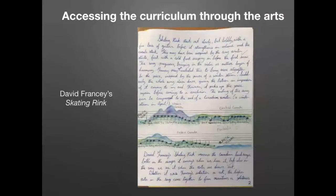Here's an interesting example of student work. When discussing landform regions of Canada, this student took David Francie's skating rink from the album Skating Rink and made a correlation between the landscape shape and the melody within the piece. She wrote a wonderful piece explaining and discussing the importance of our landscape and physical features in Canada. This was an entirely choice assignment — this student took off with the idea as both a visual artist and a musician.